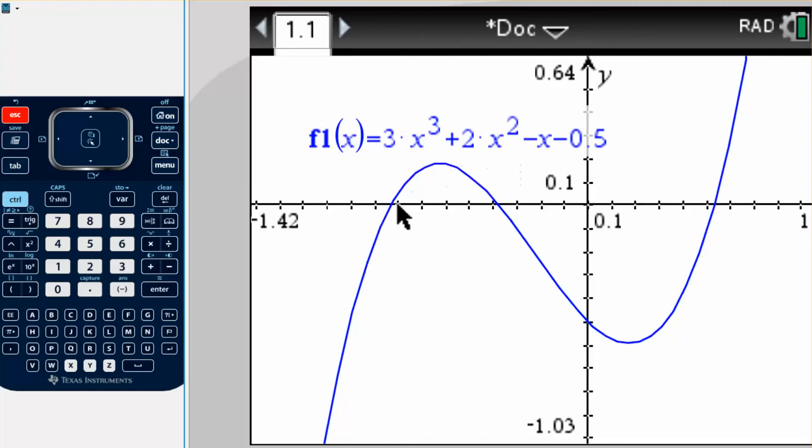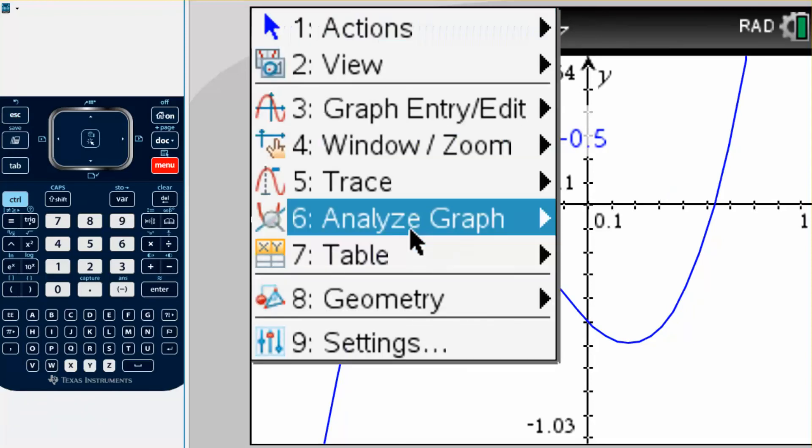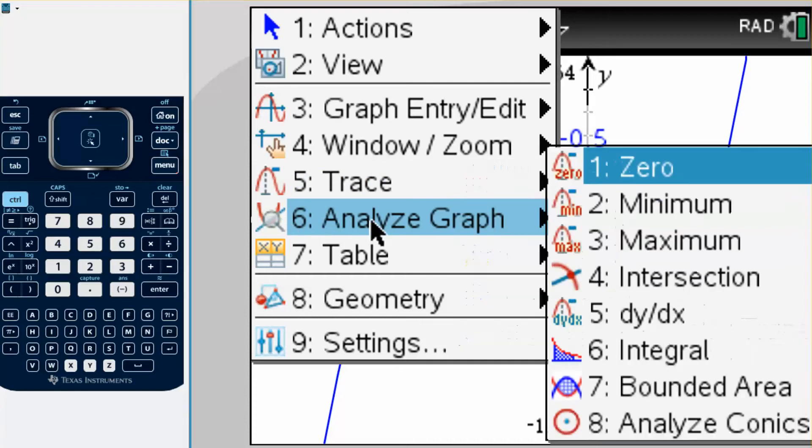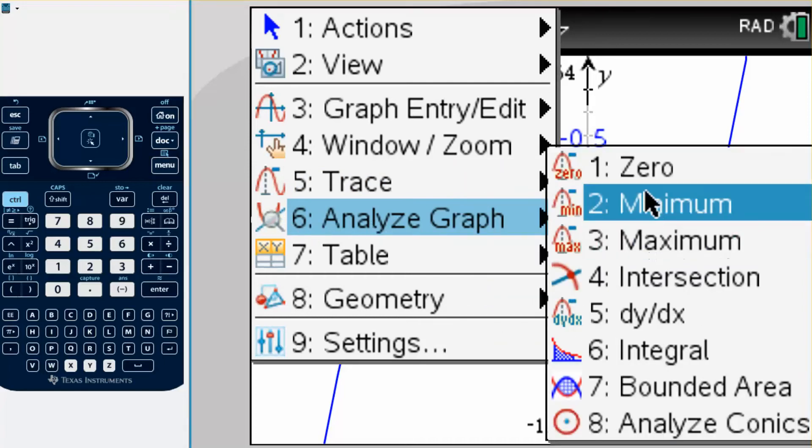Let's say I wanted to find the x intercepts again, I'll just find one of them this time. The other thing you can do is go menu, and last time I went trace and we traced the graph that way, but this time I'm going to go to 6, go to analyze graph, and it gives you some options here.